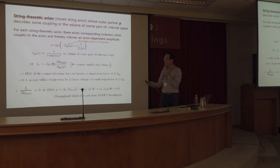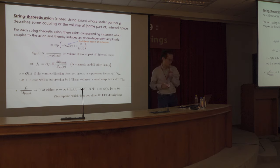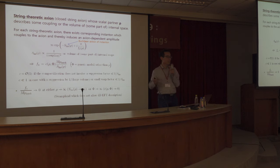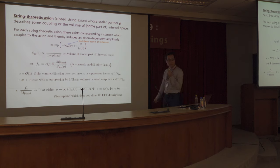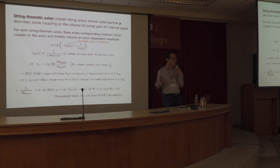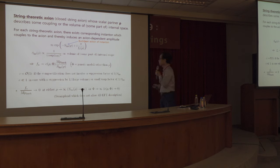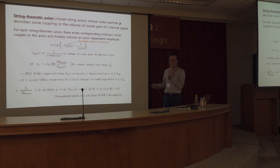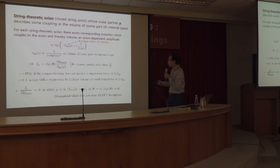String-theoretic axions have a scalar partner that describes some coupling or the volume of the internal space, or some part of the internal space. For these string-theoretic axions, the physical properties are perhaps most conveniently described by the corresponding instanton amplitude. For each string-theoretic axion there exists a corresponding instanton which couples to the axion, and in that sense f_a also determines the coupling to these instantons.